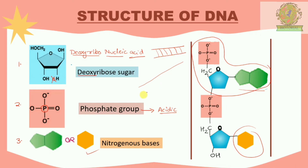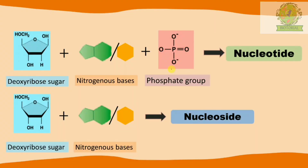This repeating unit forms a linear strand. The nitrogenous bases are situated laterally on the strand. Then comes another strand with its own nitrogenous bases. When there is bonding between the nitrogenous bases from the two different strands, we can say that DNA is formed.